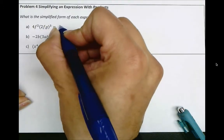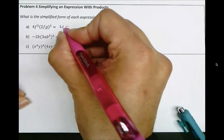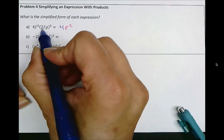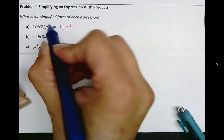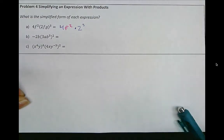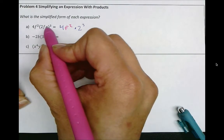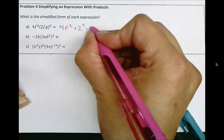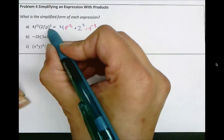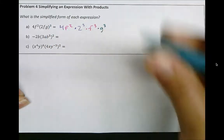We'll rewrite this by bringing in the 4, bringing in the f squared, and then dealing with what's in the parentheses: that's 2 to the power of 3, so times 2 to the power of 3. Then we have f to the power of 3, so times f to the power of 3. And lastly, we have g to the power of 3, that's times g to the power of 3.